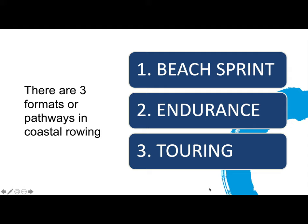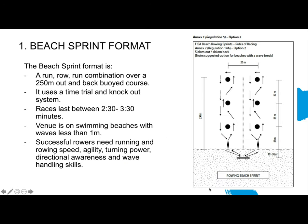Inside the discipline, there are three formats or pathways: the beach sprint, which is the shortest, endurance and touring. Beach sprint is a specific format — a run, row, run combination over 250 metres over a buoyed course. It uses a mixture of time trial and knockout. Races last between two and three and a half minutes. The venues are typically swimming beaches with waves smaller than a metre. Successful rowers need running and rowing speed, turning agility, directional awareness and wave handling skills — a real range of skills on and off the beach.